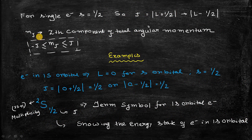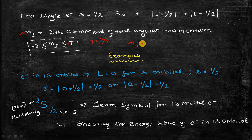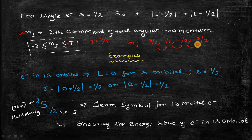There is also a term called mJ, which is the J-component of the total angular momentum. mJ can have any value between +J and −J. For example, if J equals 3/2, then mJ can have the values 3/2, 1/2, −1/2, and −3/2. The difference between two successive mJ values is always 1.